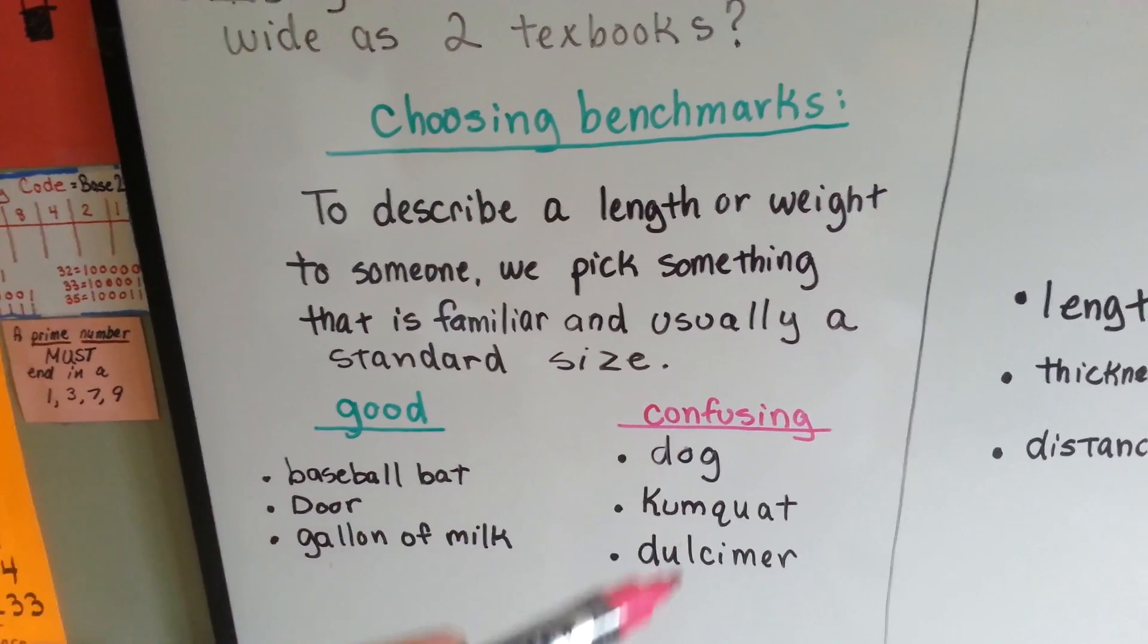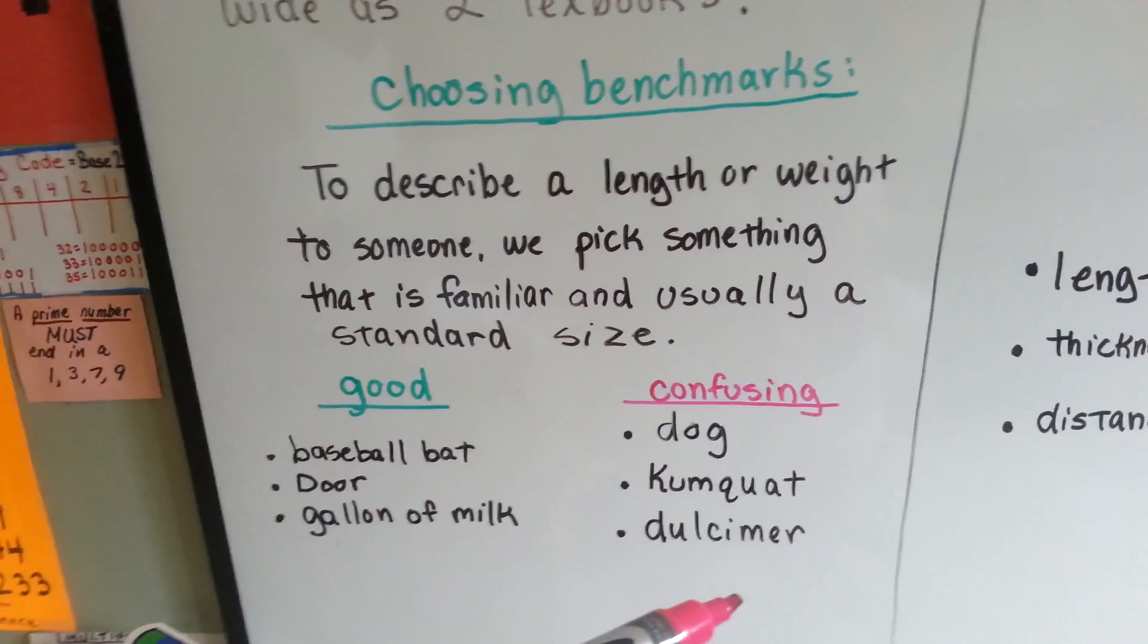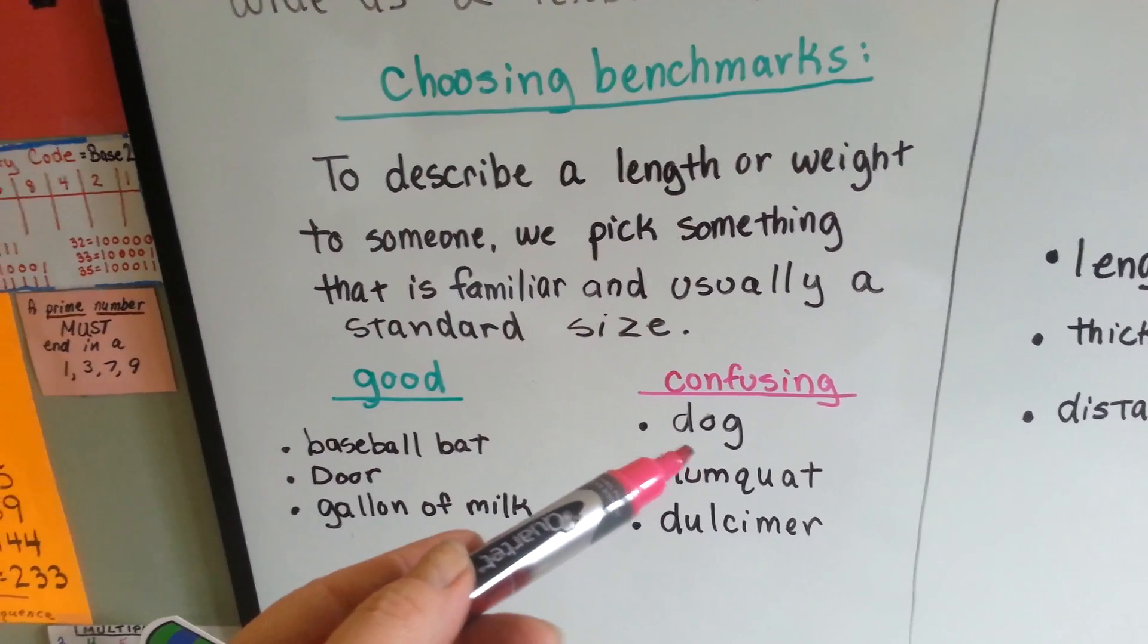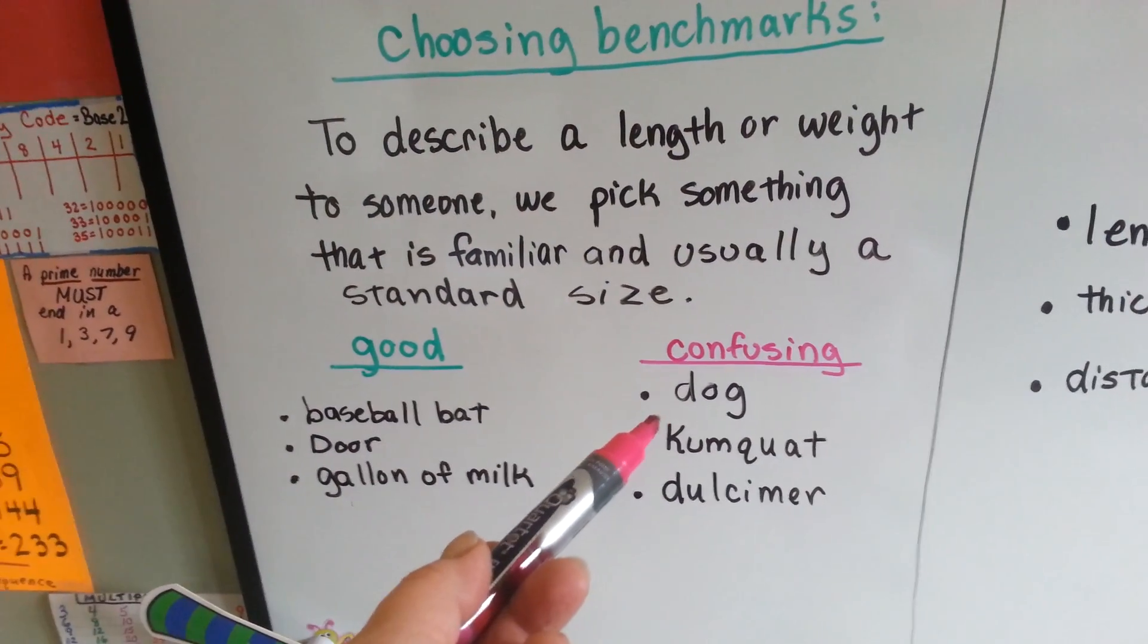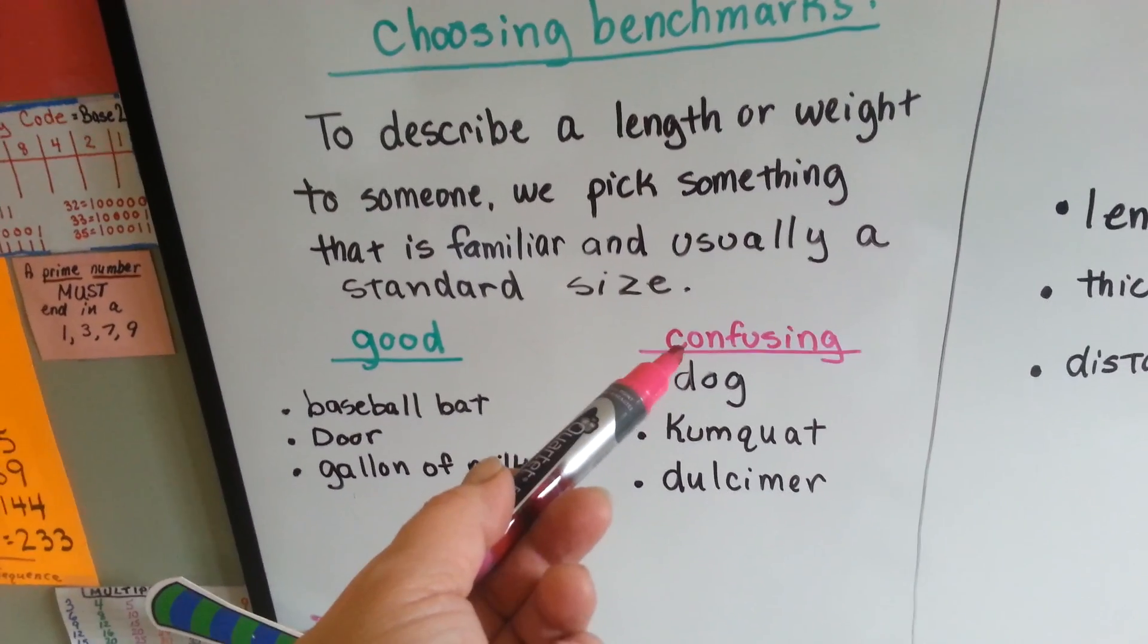If you use confusing benchmarks, people won't know what you're talking about. If you said, he weighed as much as a dog, well, what kind of dog? Because, was it a Chihuahua, or was it a big, huge Great Dane? So you would have to say, what kind of dog?